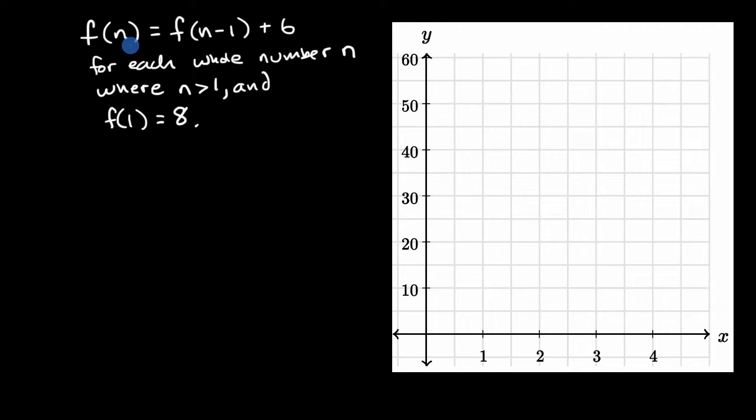We are told that f of n is equal to f of n minus one plus six. So the value of this function for each term n is defined in terms of the value of the function for previous terms. We're essentially adding six to the previous term for each whole number n where n is greater than one and f of one is equal to eight.